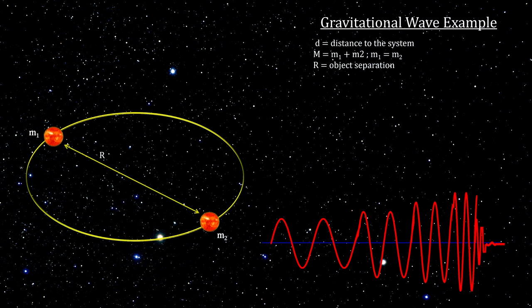To get an idea on the expected amplitudes and frequencies for gravitational waves created by a system like this one, let's put in some numbers. Suppose this system is 100 light years away, and each star is the mass and size of our Sun, and the distance between them is 50 times the distance between the Earth and the Sun.